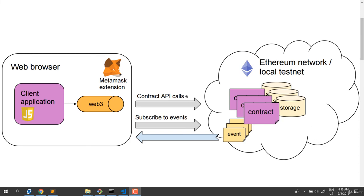At the front end we have the client-side application and a web browser that accepts crypto with a plugin like MetaMask. Web3 sits in the middle of the picture - we interact with the Ethereum network by contract API calls or by subscribing to events that happen, and get back information to update the client-side app.